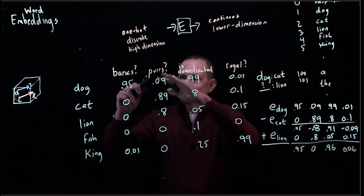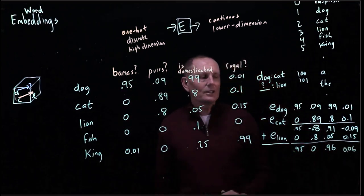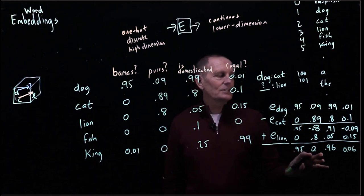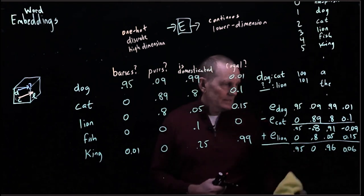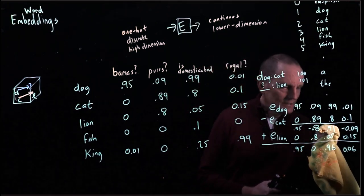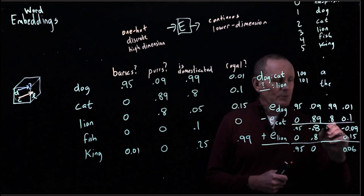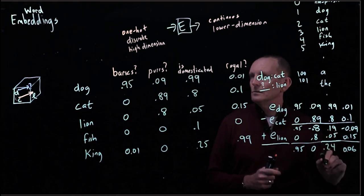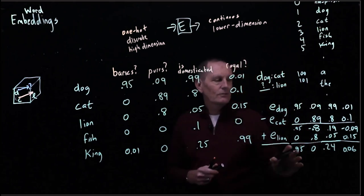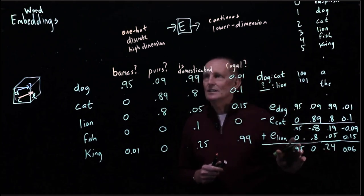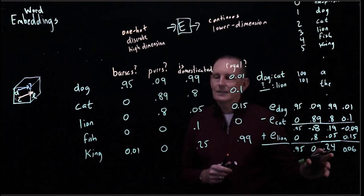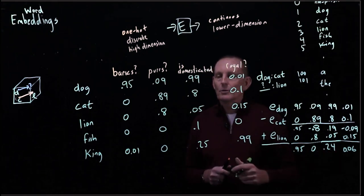And now we go and we say, let's assume we got a whole lot more words filled out here. Which word is the closest to 0.95, zero, 0.96, and 0.06? Let's see, we didn't do this quite right. Let's fix this. So this is 0.99 minus 0.8 is 0.19. So we're looking for something which barks, doesn't purr, is slightly domesticated, and not very royal.